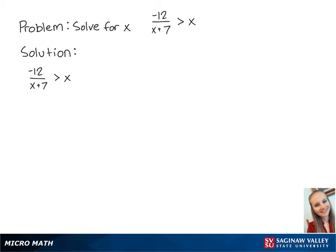For this problem, we're going to solve for x in the inequality: negative 12 over x plus 7 is greater than x. First, we want to get the right side equal to 0, so we're going to subtract x from both sides so that we have negative 12 over x plus 7 minus x is greater than 0.